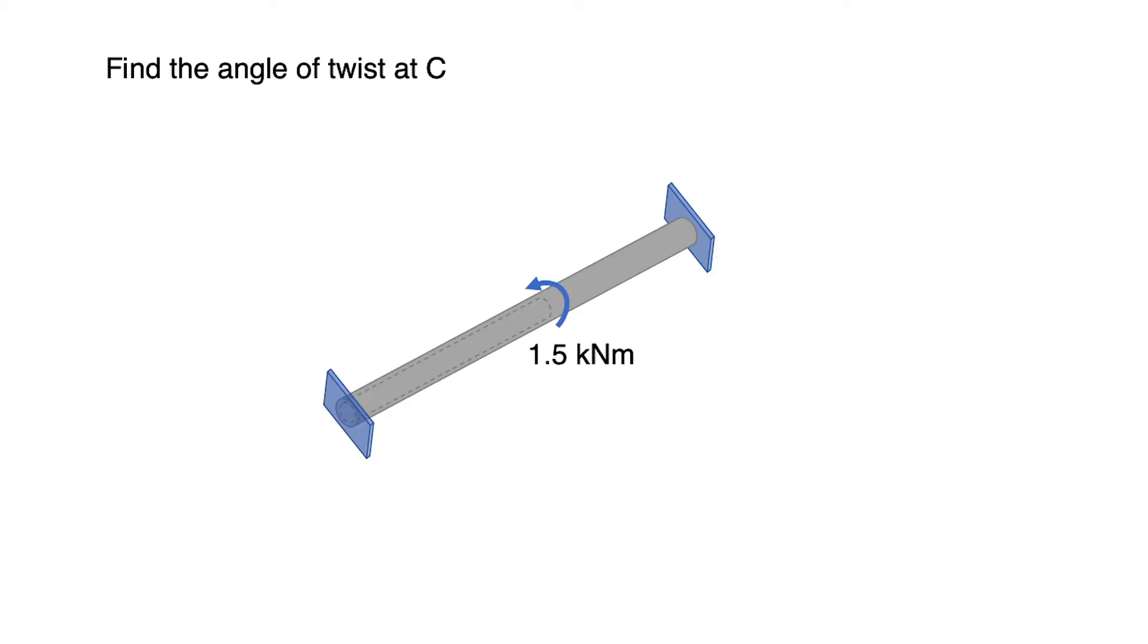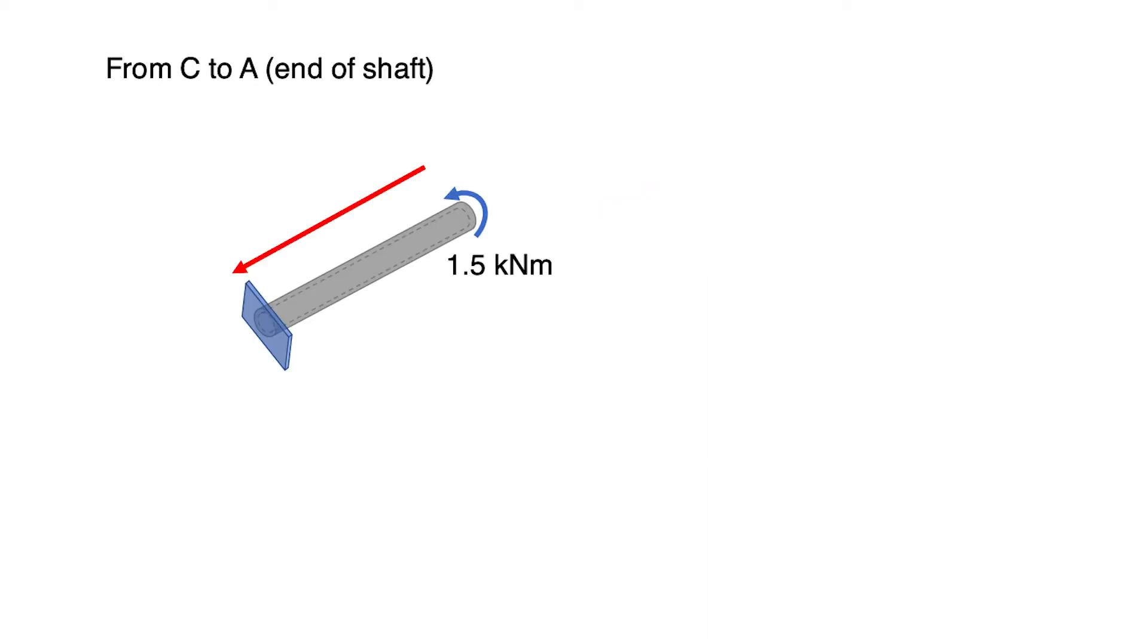The next question is find the angle of twist at C. To calculate the angle of twist at C, we can take from the point C to the point A, or end of the shaft at A, or we can take from the point C to the point B, or end of the shaft at B. The final value of angle of twist will be the same, but different in sign positive and negative. For example, if we take from the point C to the point A.